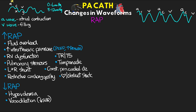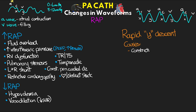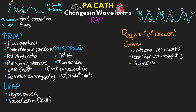Finally, there's the rapid Y descent, which we can see with constrictive pericarditis, restrictive cardiomyopathy, and severe tricuspid regurgitation. Here we have rapid filling of the right ventricle leading to rapid outflow of blood from the right atrium, hence the steep Y descent. Here is an example of that.